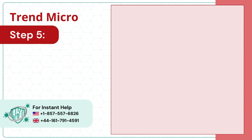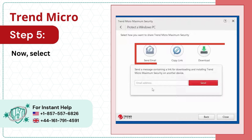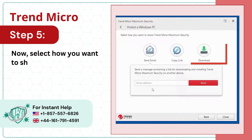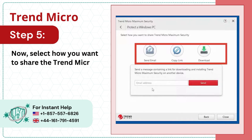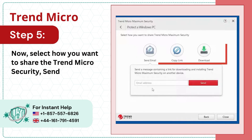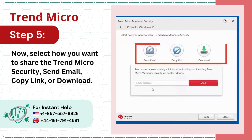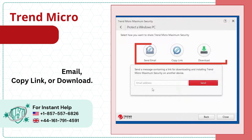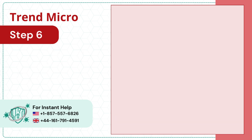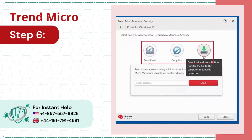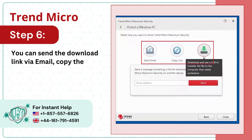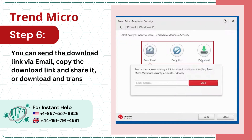Step 5: Now select how you want to share the Trend Micro Security — Send Email, Copy Link, or Download. Step 6: You can send the download link via email, copy the download link and share it, or download and transfer the file via USB.